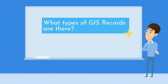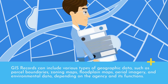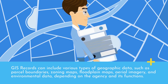What types of GIS Maps records are there? GIS Maps records can include various types of geographic data, such as parcel boundaries, zoning maps, floodplain maps, aerial imagery, and environmental data, depending on the agency and its functions.